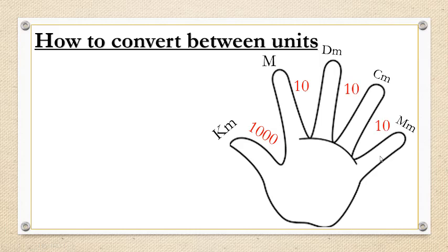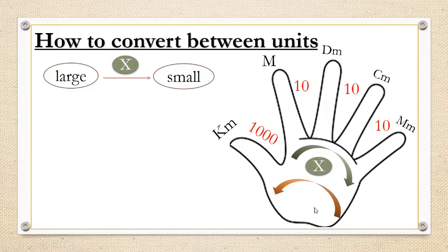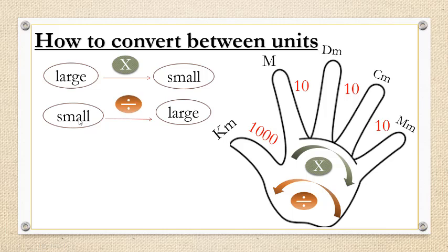To move from a large unit to a small unit, we move in this direction, so we will multiply. If we have a large unit and want to convert to a small unit, we multiply. But if we move from a small unit to a large unit, we move in the other direction, so we will divide. If we have a small unit and want to convert to a large unit, we divide.